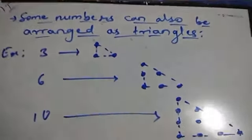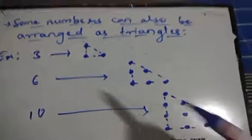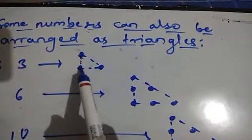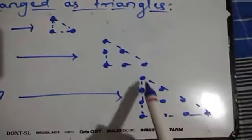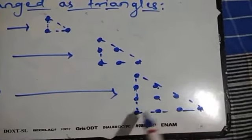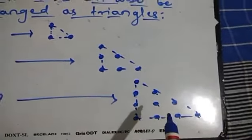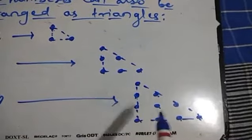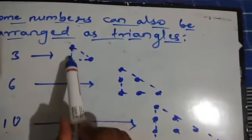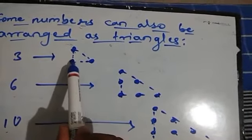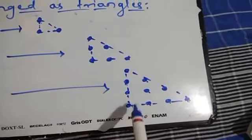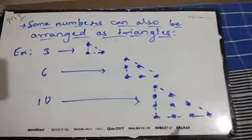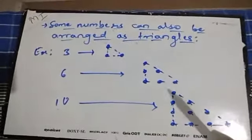Notice the pattern: each row adds one more dot than the previous. Vertically and horizontally, the counts increase by 1 each time — 1, 2, 3, 4 — and these counts must be equal on both sides to form a proper triangle. In this way we can form triangles using certain numbers.